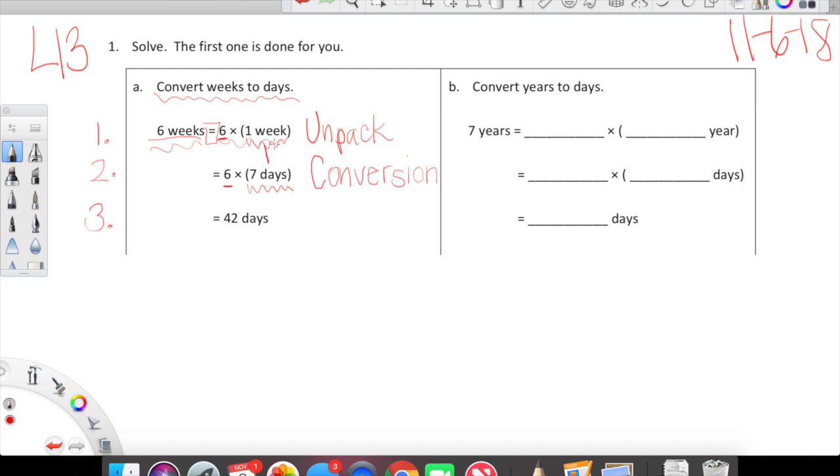Our second line is where the magic really happens - that's our conversion line. The conversion happens very specifically. In the conversion line, this number and this number will remain the same. This unit and these units - this is where the converting happens. This unit 1 week and this unit 7 days are different units, however they are equal to one another.